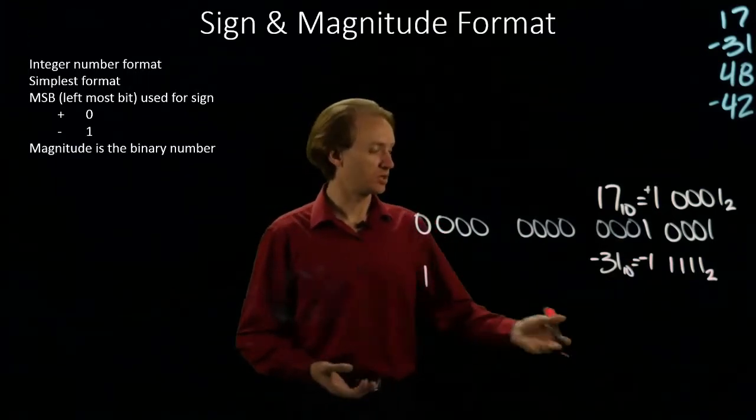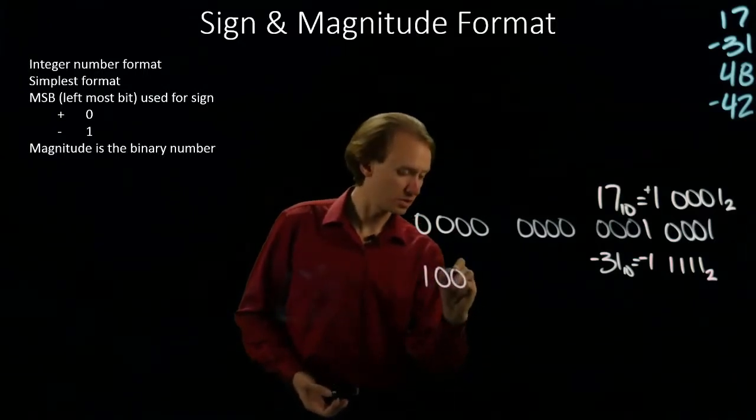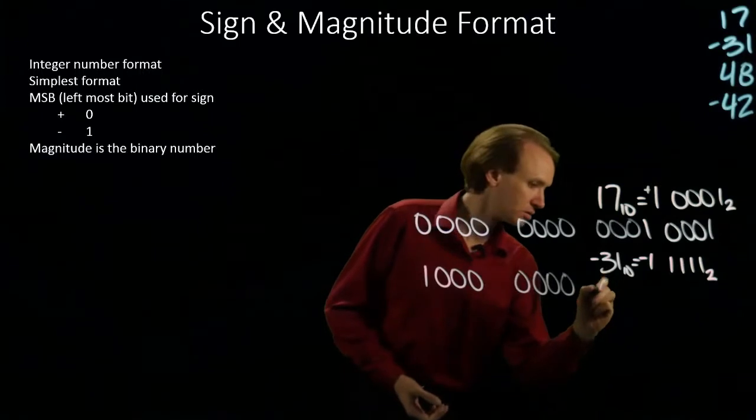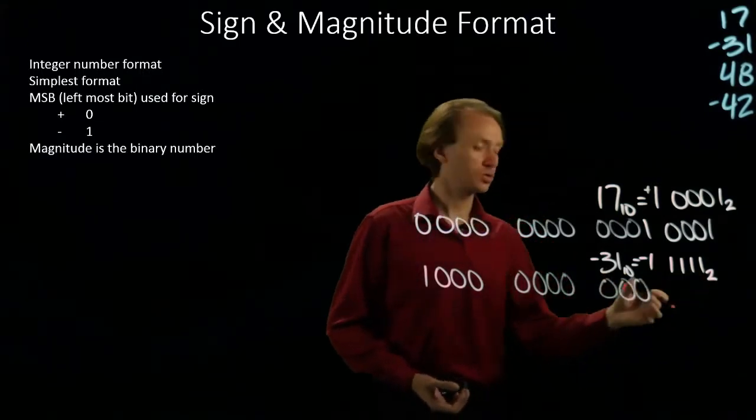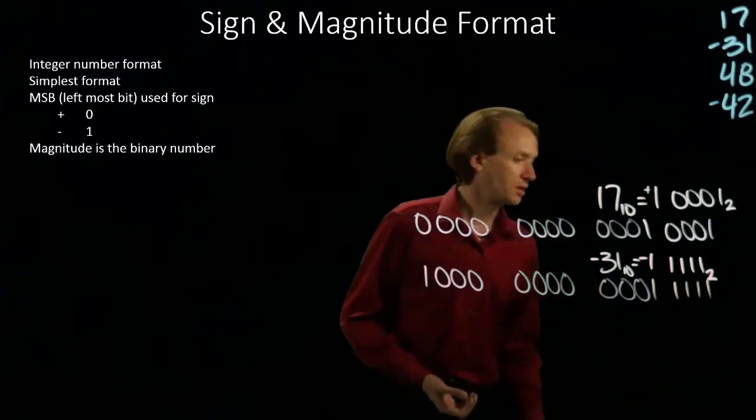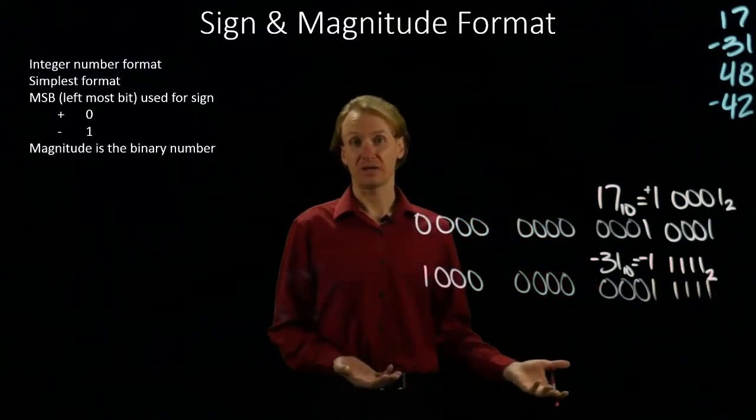Now I need a number of leading zeros to fill in the space and then the actual magnitude of my number. And there's negative 31 in sign and magnitude format.